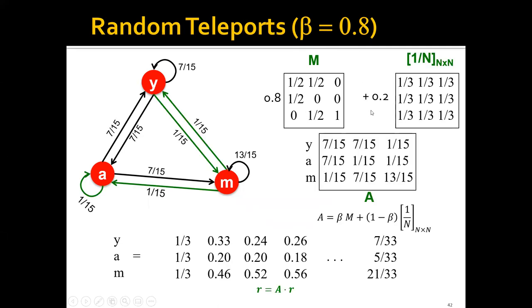The next step would be to calculate or construct this new stochastic matrix A using this equation. So it has two terms. The first term would be 0.8 times this old matrix M, and the second term will be 0.2 times the teleport matrix. And we get this new stochastic matrix A here.